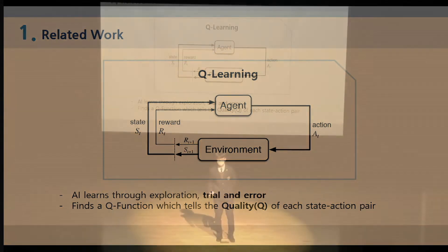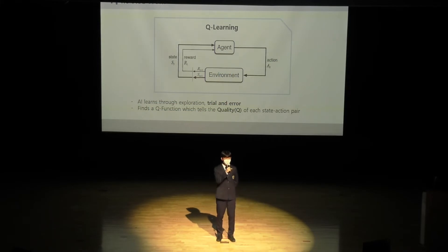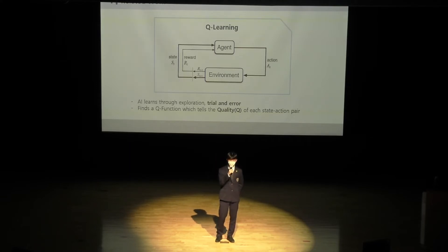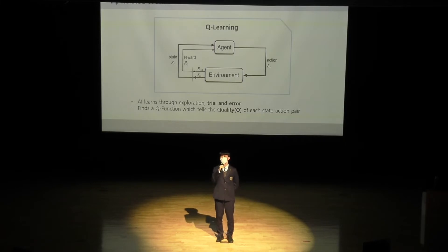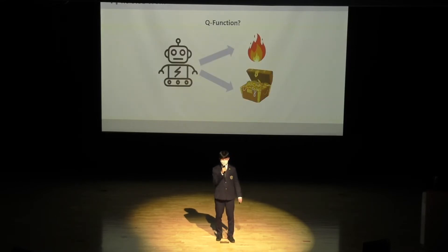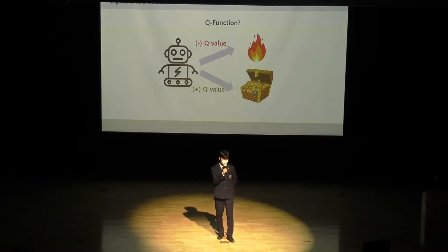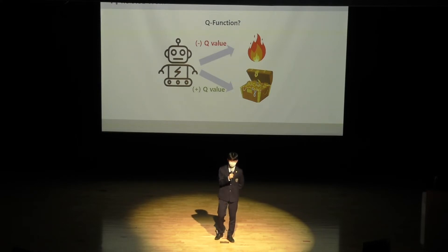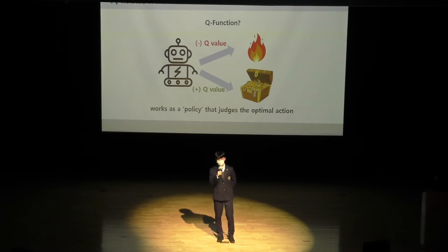The first background theory is Q-learning, which is a branch of reinforcement learning. It uses a function named the Q-function, which maps each state-action pair into a quality value. Quality values indicate the expected future reward, and the AI obtains quality values through various steps of exploring and interacting with the environment. The quality value is high if a high reward is expected by conducting a certain action in a certain state, and low if a low reward is expected. Therefore, the Q-function works as a guidebook which the agent follows to make the optimal decision.